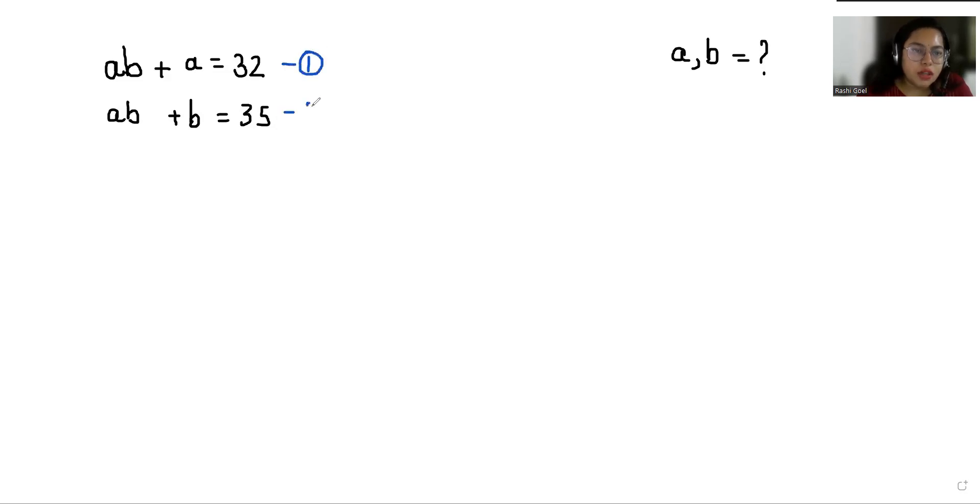First I'm considering this as equation number 1 and this is equation number 2. I'm going to subtract equation 2 from equation 1. AB plus B minus AB plus A equals 35 minus 32. So AB plus B minus AB minus A equals 3.